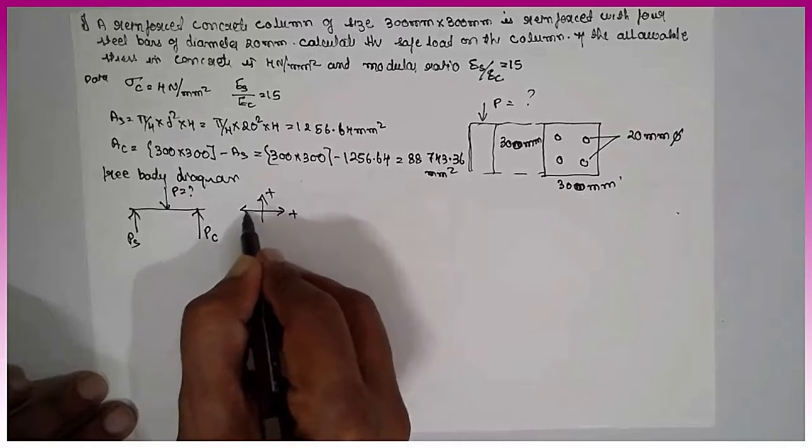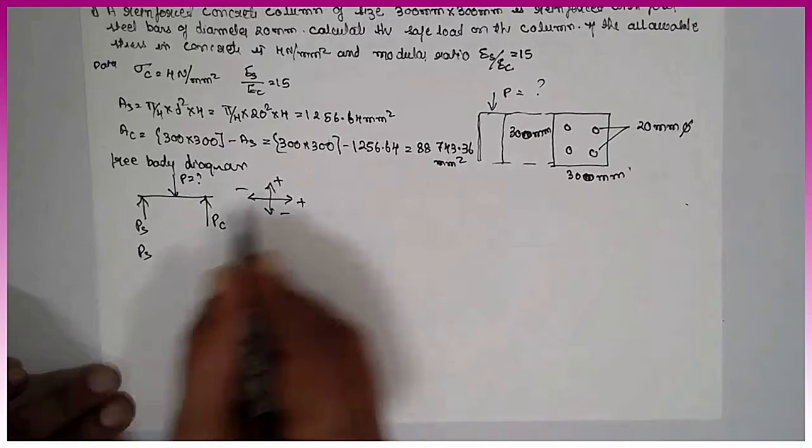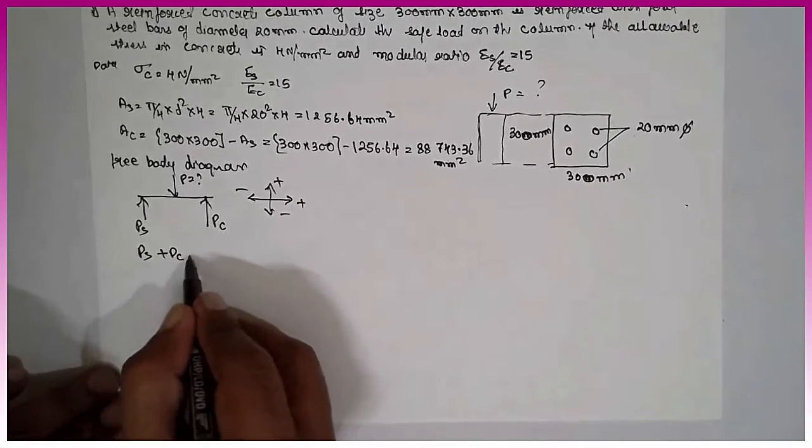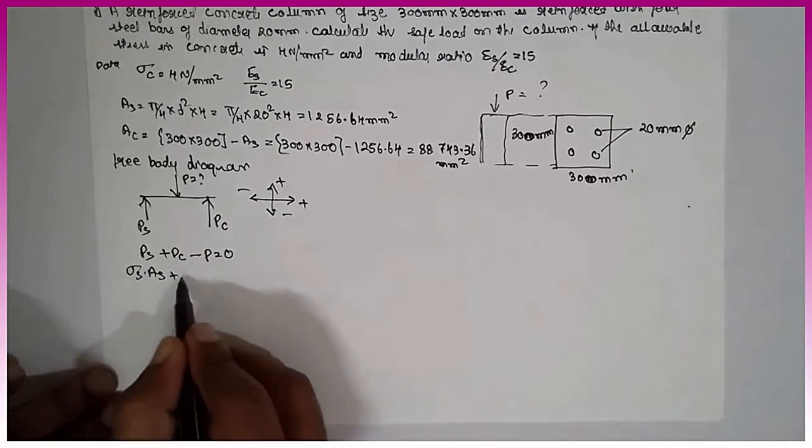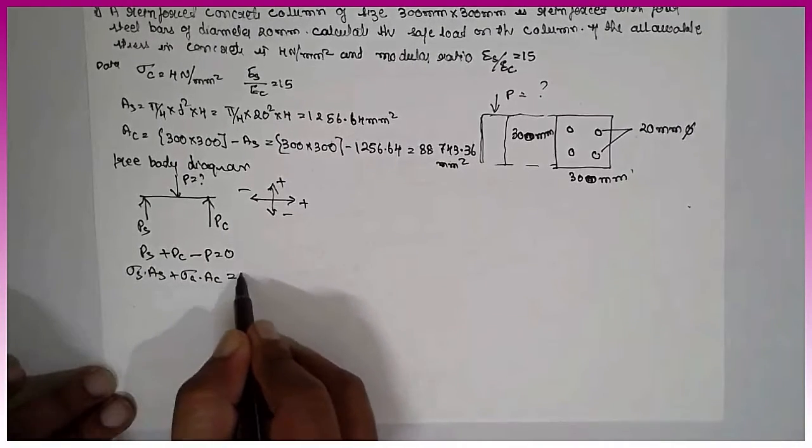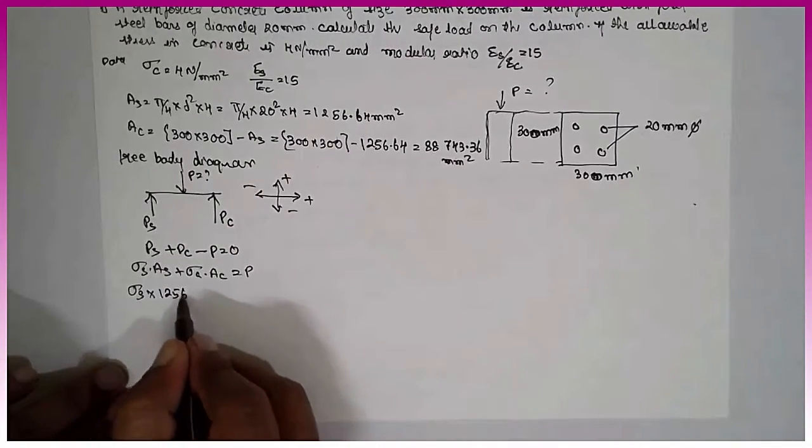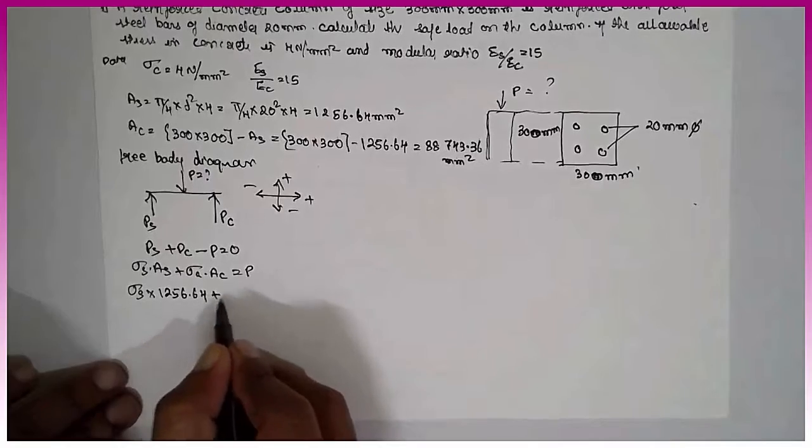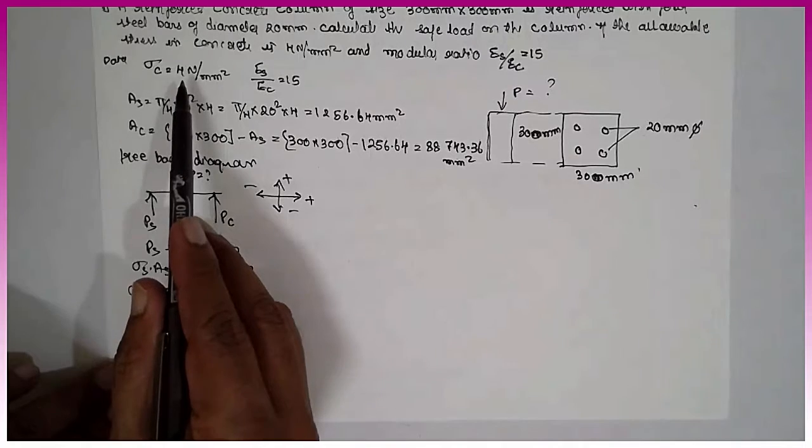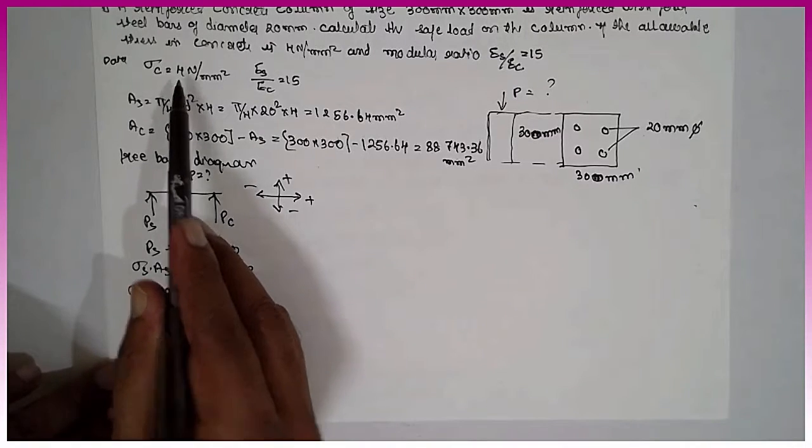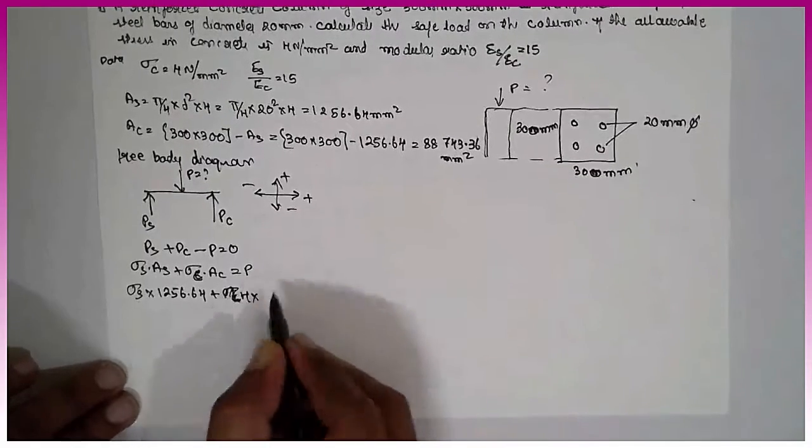Next, concrete acting upward, Pc, the unknown force which acts downward. This is what we have to find out here. We are going to use this concept in order to solve the problem. Ps is positive plus Pc is positive minus P is equal to 0. What is Ps? Sigma S into As plus Sigma C into Ac is equal to P. Sigma S into area 1256.64 plus Sigma C into.